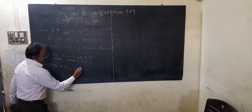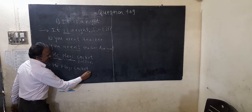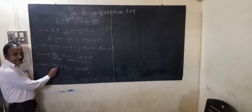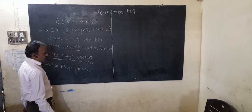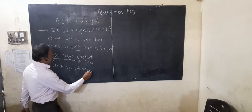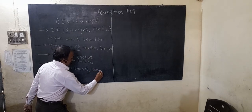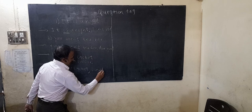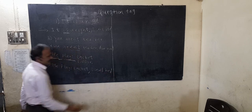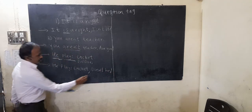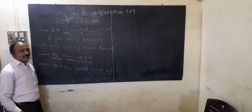For example: 'We play cricket,' — this statement is positive, so we make it negative. Since there is no helping verb and the subject is 'we', the question tag uses 'don't we?' This is called a question tag.